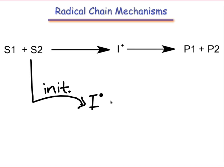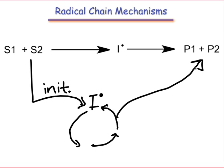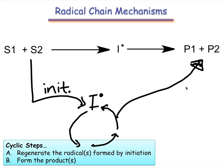This implies that the radical intermediates formed upon initiation must undergo a cyclic mechanism that regenerates the radical formed by initiation while also forming the products. These cyclic steps have been given a special name by organic chemists. They're called propagation steps, and they're the meat of radical chain mechanisms.